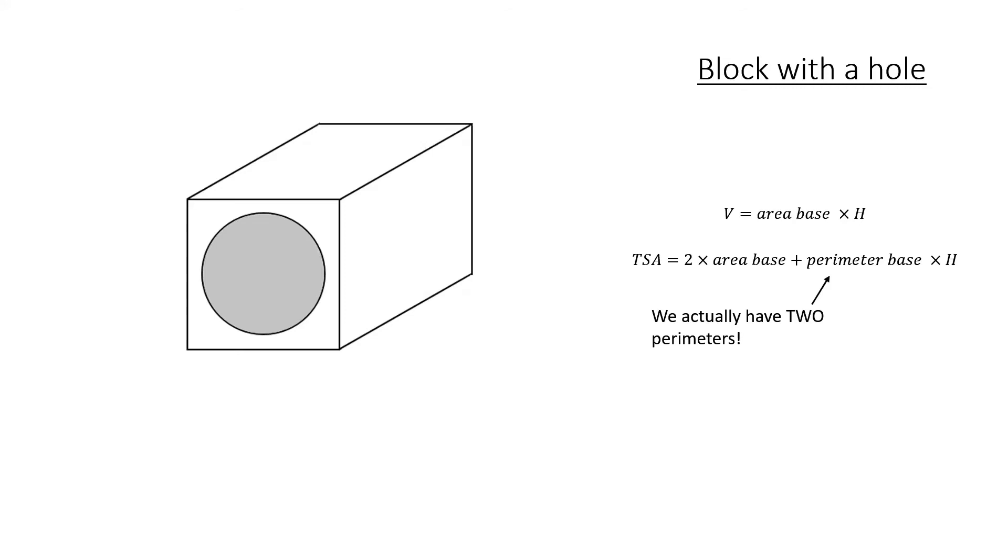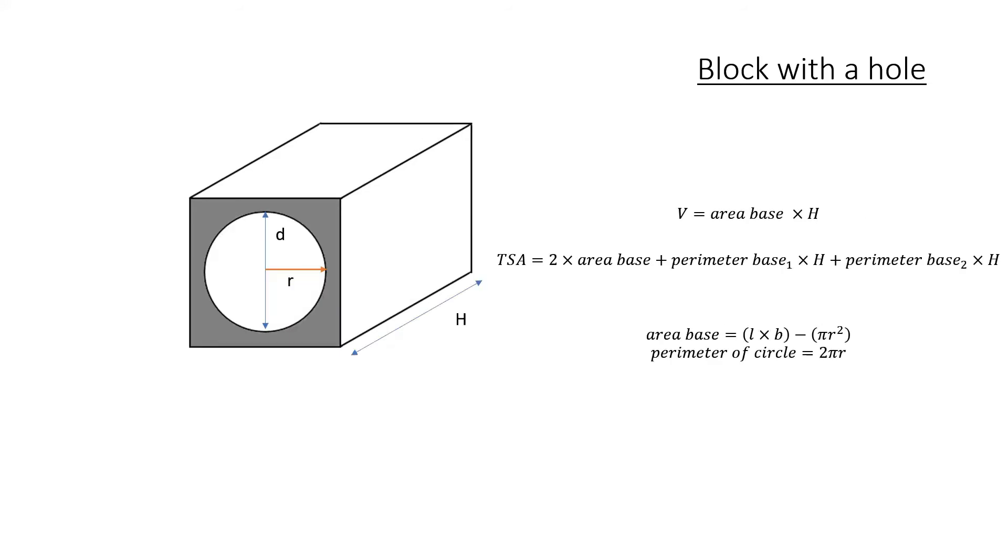Anyway, so, that means that what I'm looking at is a completely different situation here. I can still work out the area of the base, but it's going to be a little bit more tricky. So, my area of my base is going to be length times breadth minus pi r squared, which is the area of the circle.